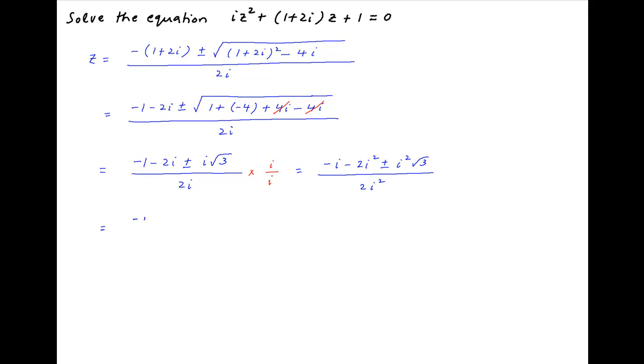Now, i square is equal to minus 1, therefore Z is equal to minus i plus 2 minus plus root 3 upon minus 2.